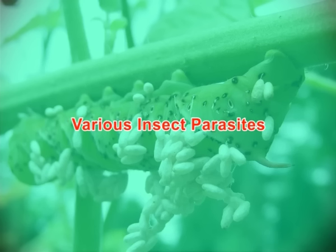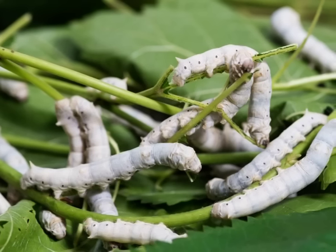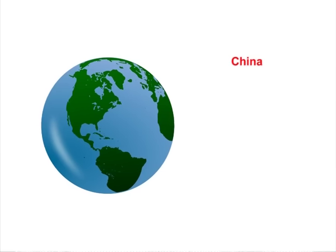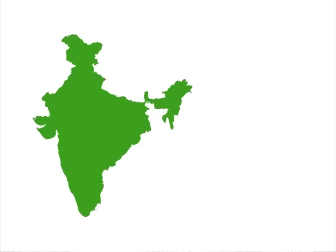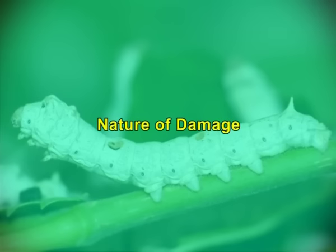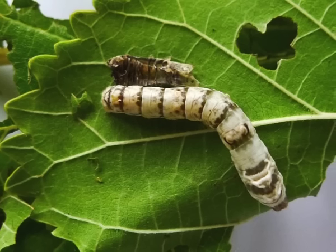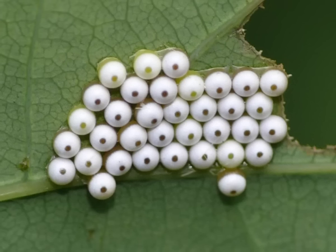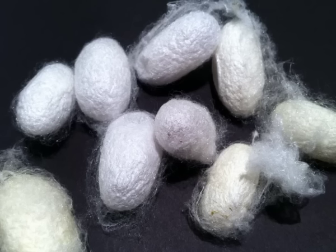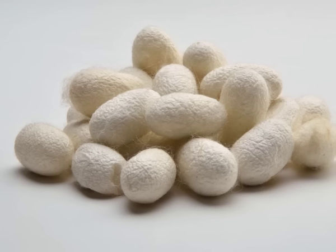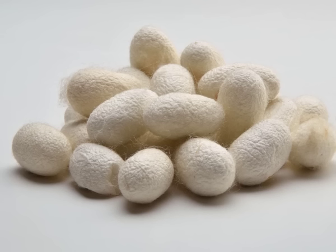Insect parasitoids: The maggots of the tachinid or Uzi fly are endoparasitic in the viscera of the mulberry silkworm. Silkworm infestation by this fly has been recorded from China, Japan, Thailand, South Korea, and India. It was prevalent mostly in northern India but since 1980 has appeared in most southern states. If eggs are deposited on early instar larvae, the silkworm dies before pupation with the parasitic maggots wriggling out. If eggs are deposited on late larvae, the larvae may spin a normal cocoon, but the cocoon is rendered useless for both reeling and reproductive purposes.